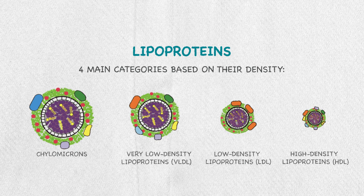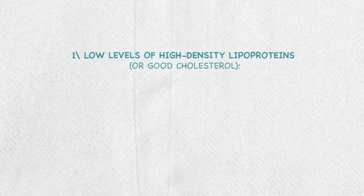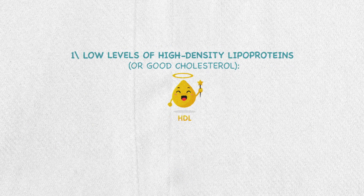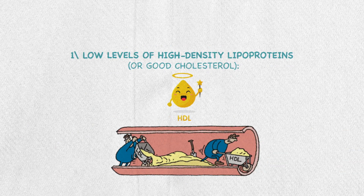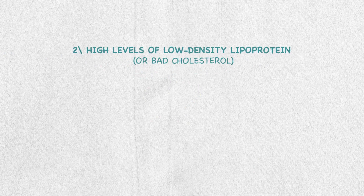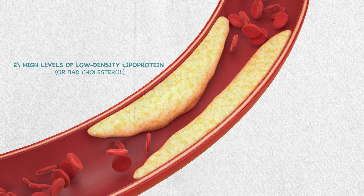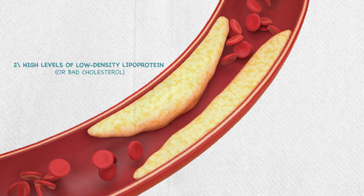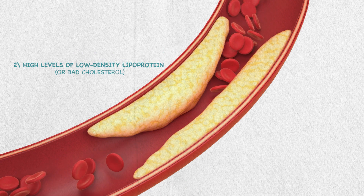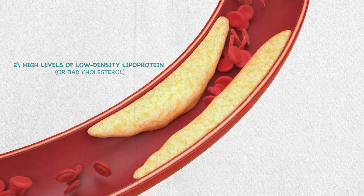Dyslipidemia can come in many forms, but the main observed abnormalities are: first, low levels of HDL, or the good cholesterol, because HDL performs reverse cholesterol transport by removing excess cholesterol from the peripheral tissues and transporting it back to the liver. Second, we have high levels of LDL, or the bad cholesterol. High amounts of LDL can be harmful because these lipids can build up and adhere to the innermost layer of the artery wall and restrict blood flow, which in turn creates significant risk for heart attacks and strokes.